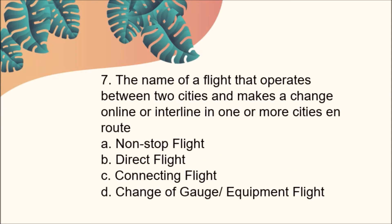Number seven: The name of a flight that operates between two cities and makes a change on-line or inter-line in one or more cities. A, Non-stop flight; B, Direct flight; C, Connecting flight; D, Change of Gauge or Equipment flight. The answer is Letter A, Non-stop flight.